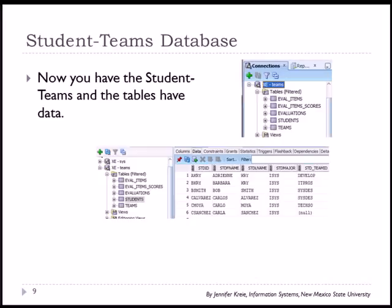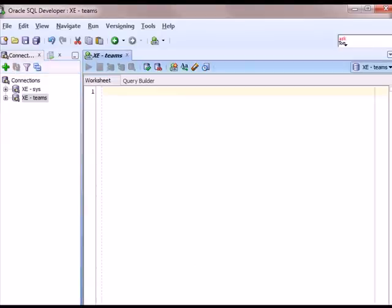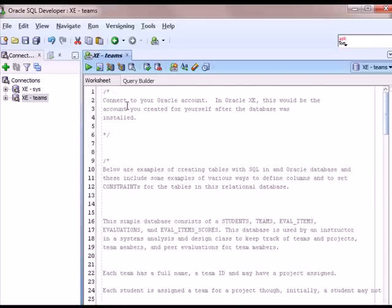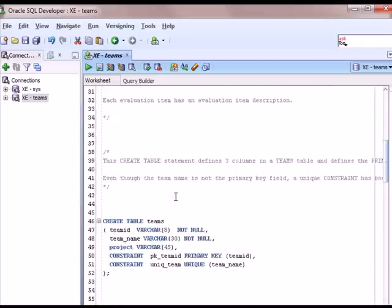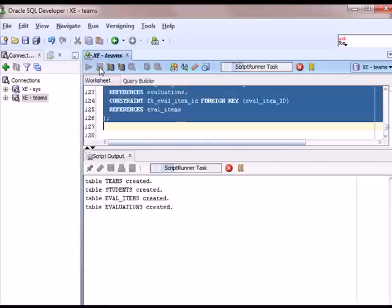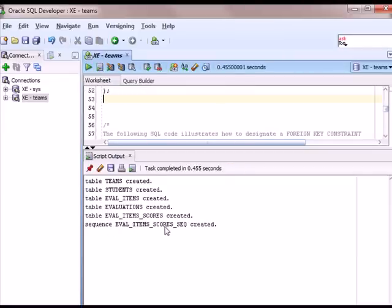Once you've run these scripts, you will have data. I'm going to switch over to SQL Developer and run the scripts. I'm just going to copy-paste from the script files into the SQL worksheet. The grayed out lines are comment lines, and the darker lines in blue and black indicate executable commands. I'll run the entire script and see that my tables and sequence have been created.